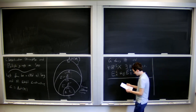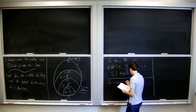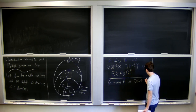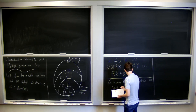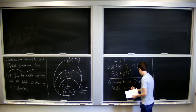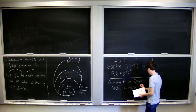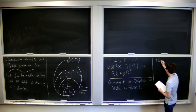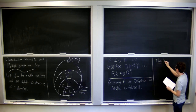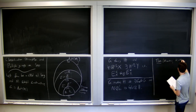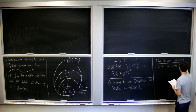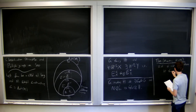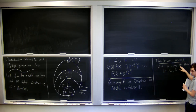We say G involves H if and only if there's a closed subgroup G0 of G, and a closed normal subgroup N of G0, such that G0 mod N is isomorphic to H. How this relates to classification strength: this is a basic fact of Mackey. If G involves H then H is below G in classification strength — every action of H can be lifted to an action of G in a very canonical way, so this is actually a much weaker way of stating the result.